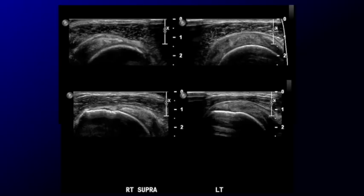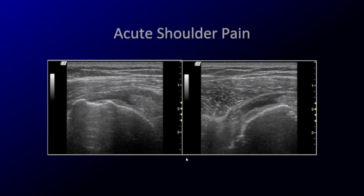You see that there's a missing layer. Sometimes that layer — especially in the acute setting — can be filled with blood or fluid, making it very easy to see that there is a gap in that tendon. One pitfall is to not confuse this with a partial thickness tear, because this is the articular cartilage that was shown earlier.